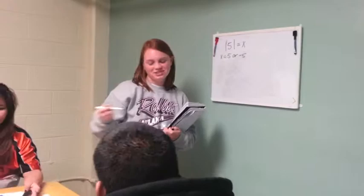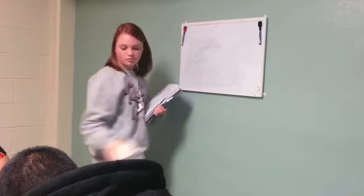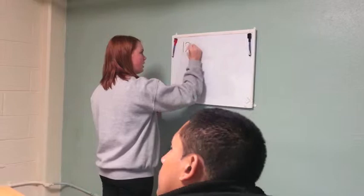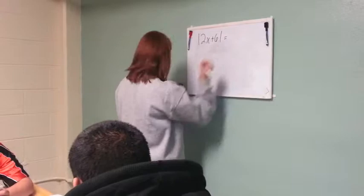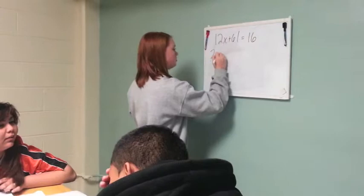Okay, we'll move on to a more complex example now. Let's try absolute value of 2x plus 6 equals 16. Can anyone tell me what the first step would be? Yes. Okay, you would have to set the equation like 2x plus 6 equals 16. Okay. And then 2x plus 6 equals negative 16.